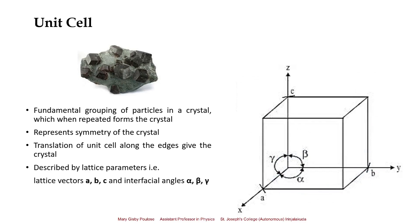To describe the unit cell, it is described by lattice parameters: the lattice vectors a, b, c along the X, Y, Z coordinates and the interfacial angles between these axes. The length along the X-axis is a, along the Y-axis is b, and along the Z-axis is c. The angles between the axes are alpha (α), beta (β), and gamma (γ). These six parameters are called the lattice parameters.